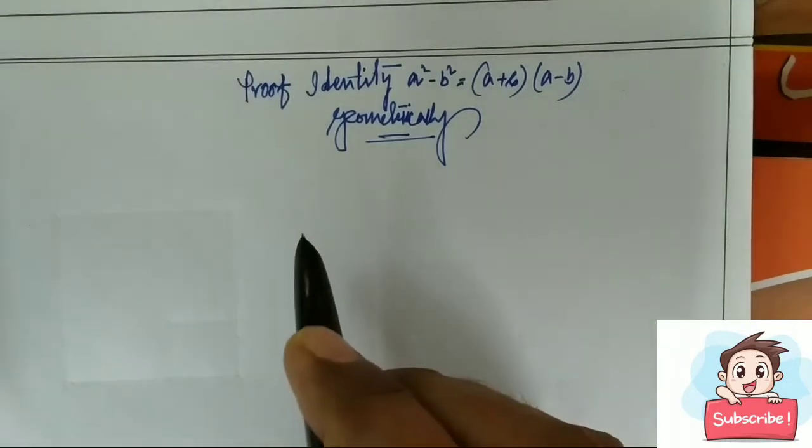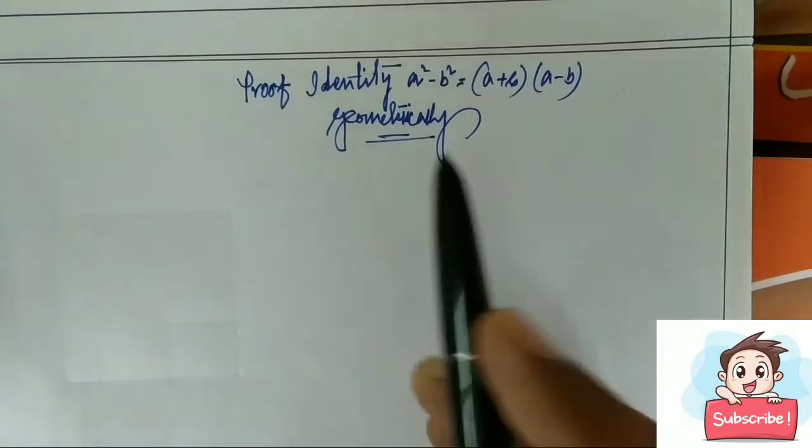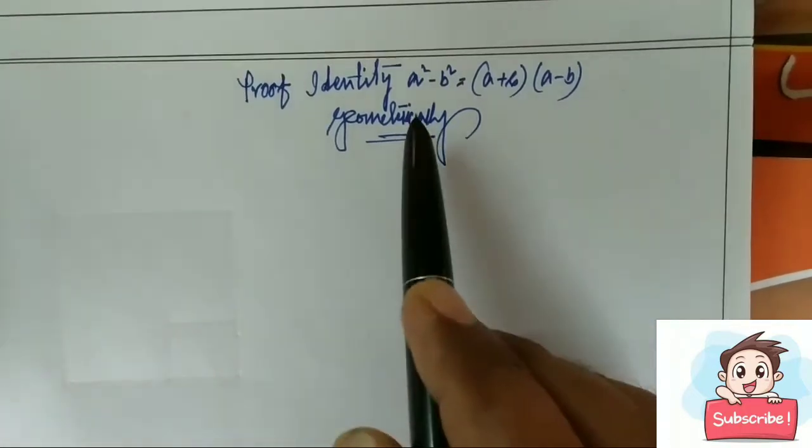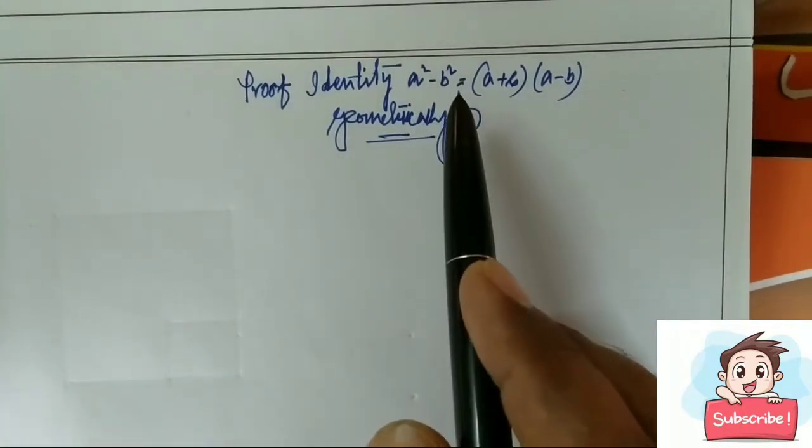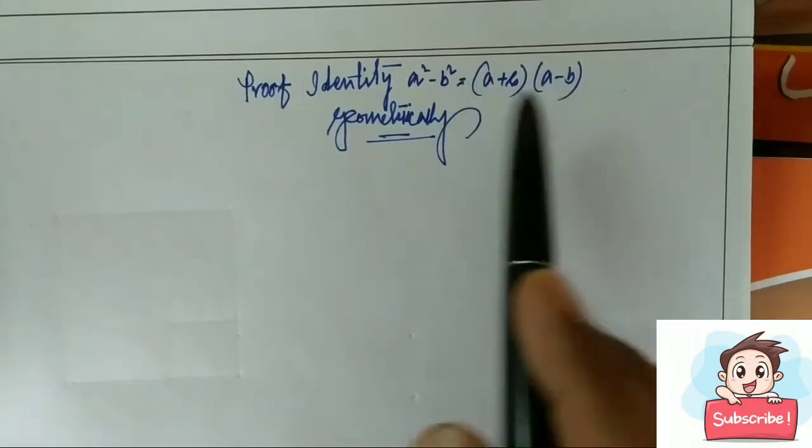Hello everybody, today we are going to prove the identity a square minus b square equals to a plus b into a minus b geometrically.